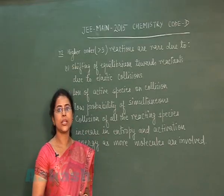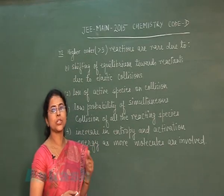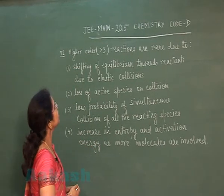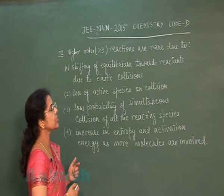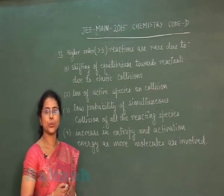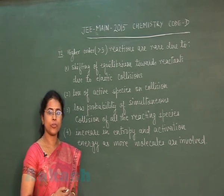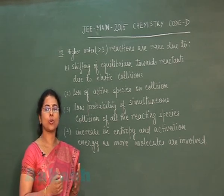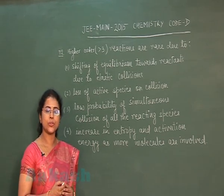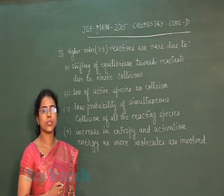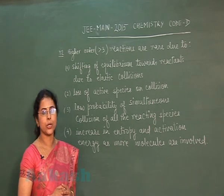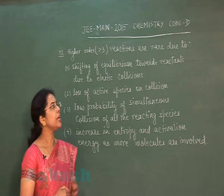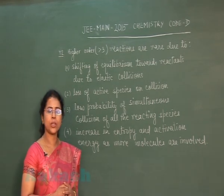Moving to question number 72: Higher order reactions (greater than 3) are rare due to — ? As we know, the order of reaction for common reactions may be 0, 1st, 2nd, or 3rd order. But order of reaction greater than 3 is rare. In this question we have to find out why.